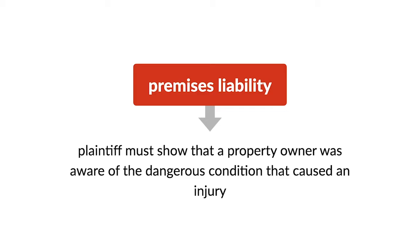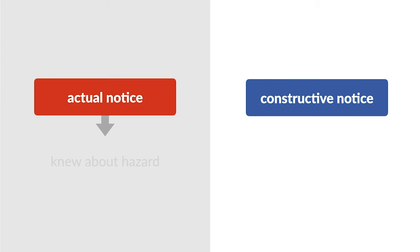In a premises liability case, a plaintiff must show that a property owner was aware of the dangerous condition that caused an injury. This requires showing that the owner either knew about the hazard, which is actual notice, or should have known about it, which is constructive notice.